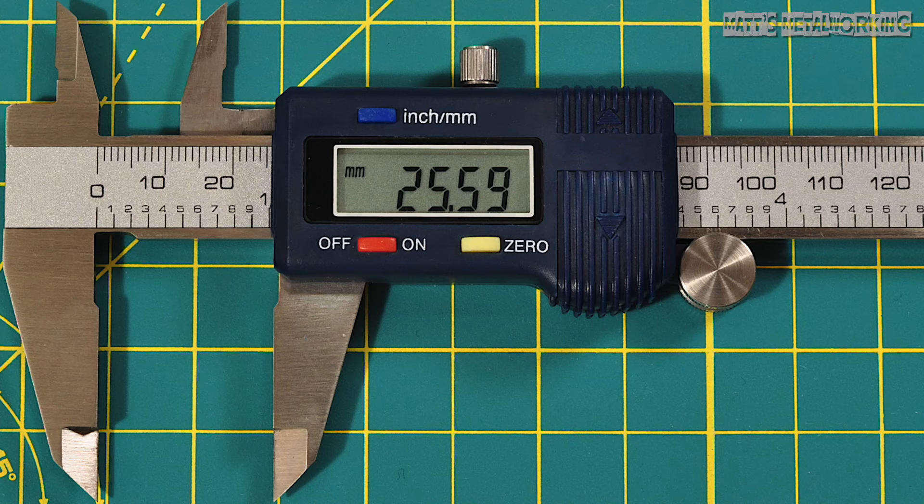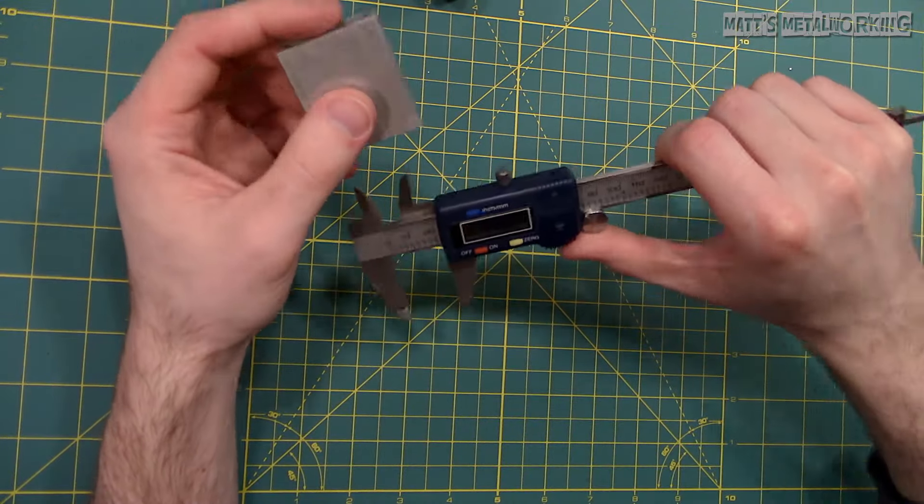This gives us a final measurement of 25.59 millimeters and finally using the inside jaws.